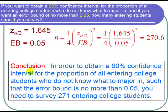And I can state that in conclusion, in order to obtain a 90% confidence interval for the proportion of all entering college students who do not know what to major in, such that the error bound is no more than 0.05, you need to survey 271 entering college students. And I'm done with the problem.